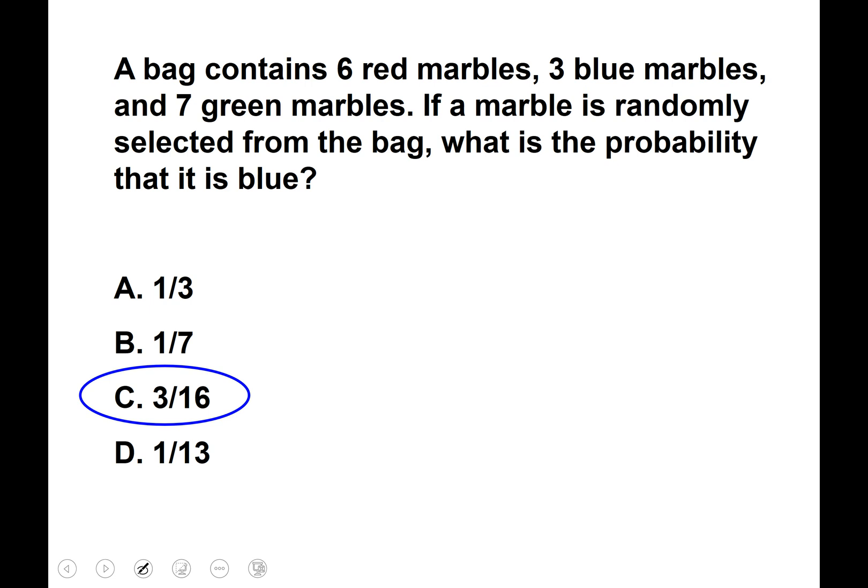The bag contains six, I'm working on the denominator here, six red marbles, three blue and seven, so that's the total number there on the bottom. If a marble is randomly selected from the bag, what is probability that it is blue? So probability of blue, what's in parentheses is considered a success. Remember that, okay probability of blue is three. Three out of, what is this here, 16 would be considered a success. Yep which is three out of 16.